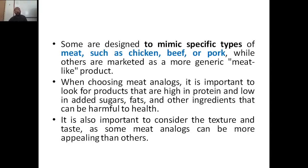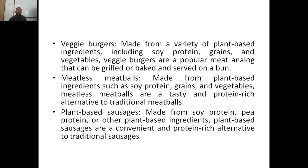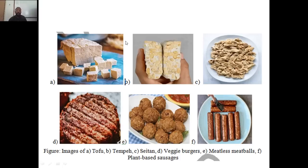When choosing meat analogues, it is important to look for products that are high in protein and low in added sugars, fats, and harmful ingredients. It is also important to consider the texture and taste, as some meat analogues can be more appealing than others. Examples of meat analogues include tofu, tempeh, and seitan — based on soybeans and wheat — as well as veggie burgers, meatless meatballs made of soy proteins, grains, and vegetables, and plant-based sausages made from soy protein, pea protein, and plant-based ingredients.